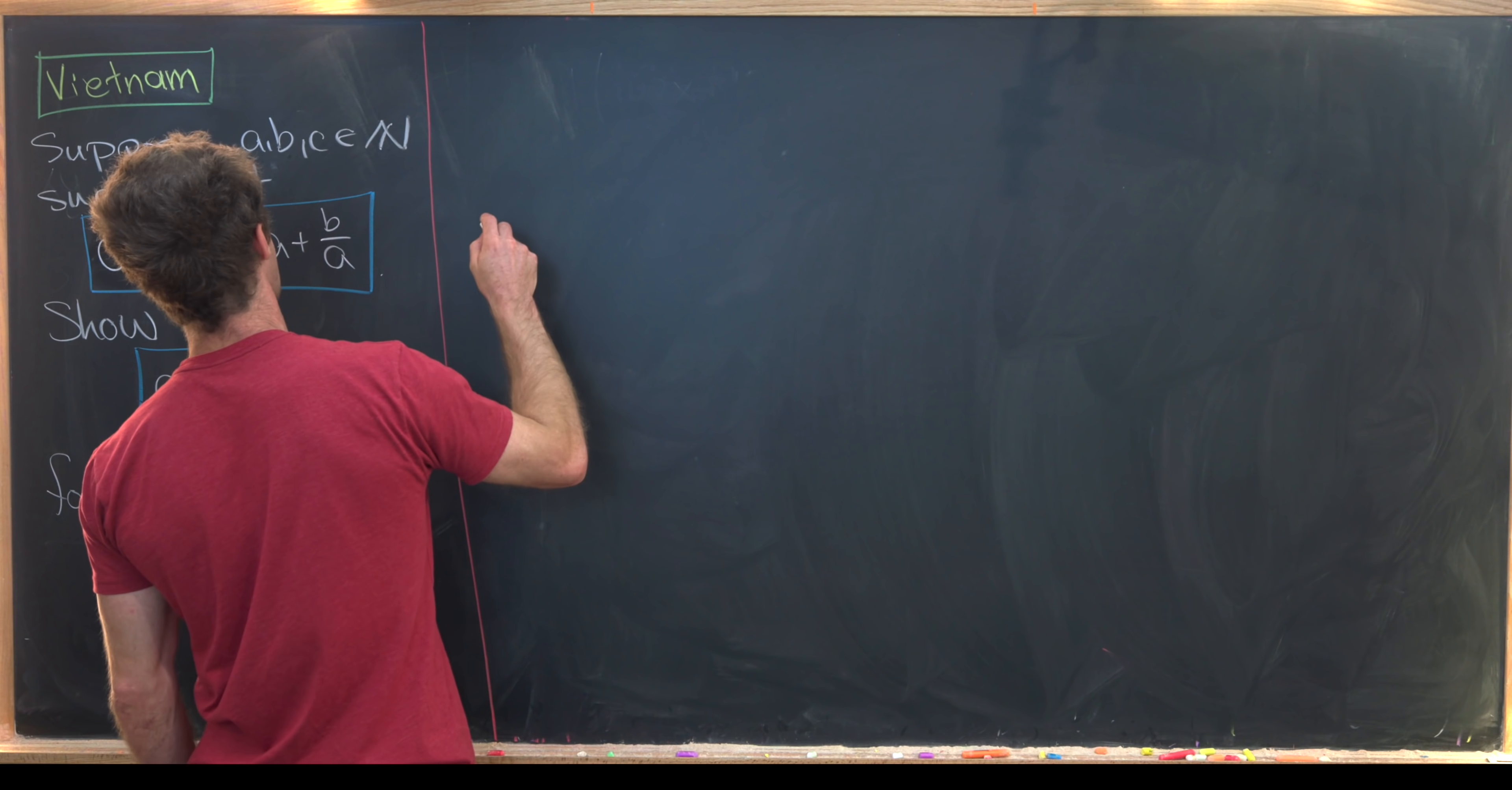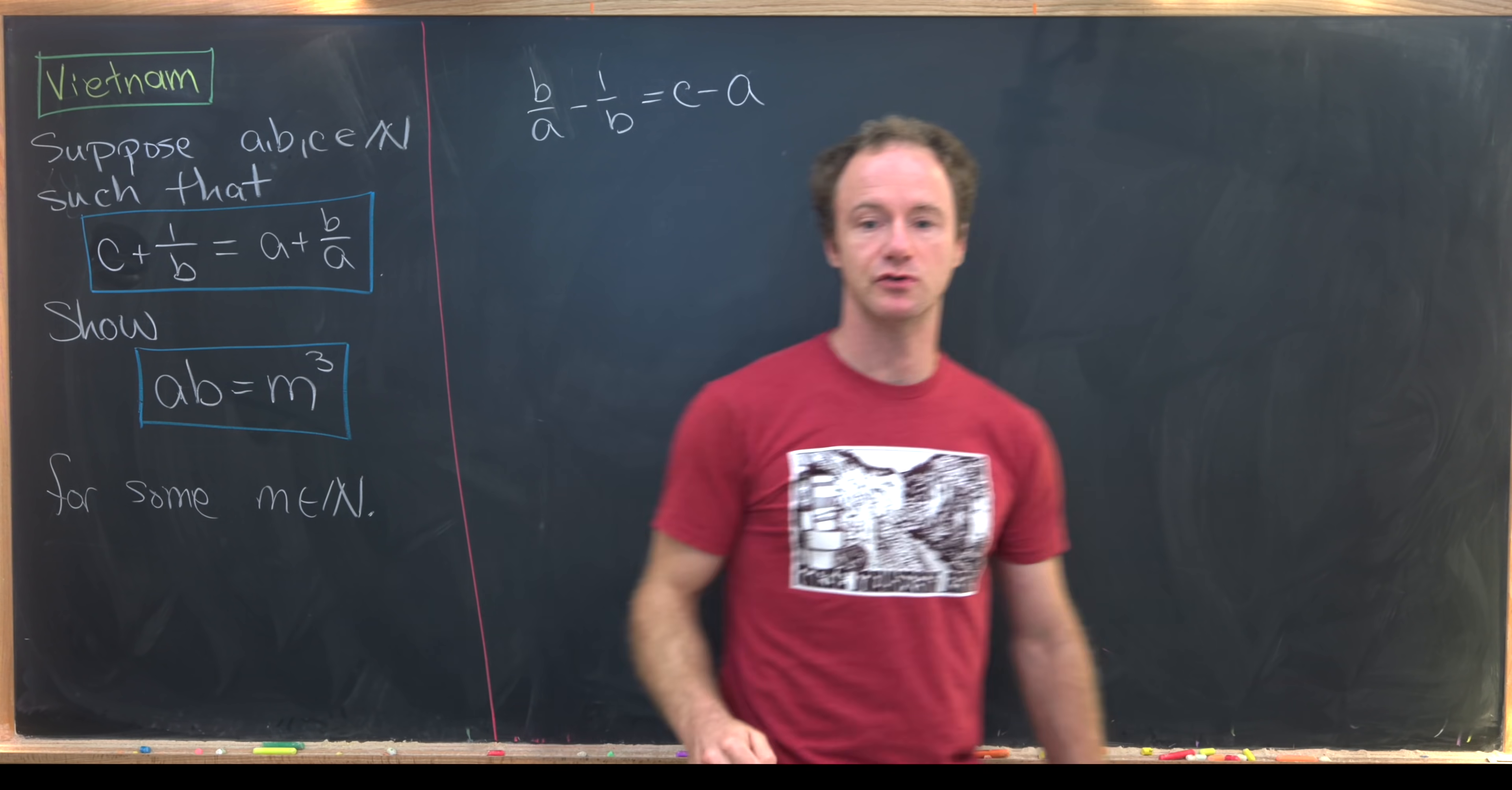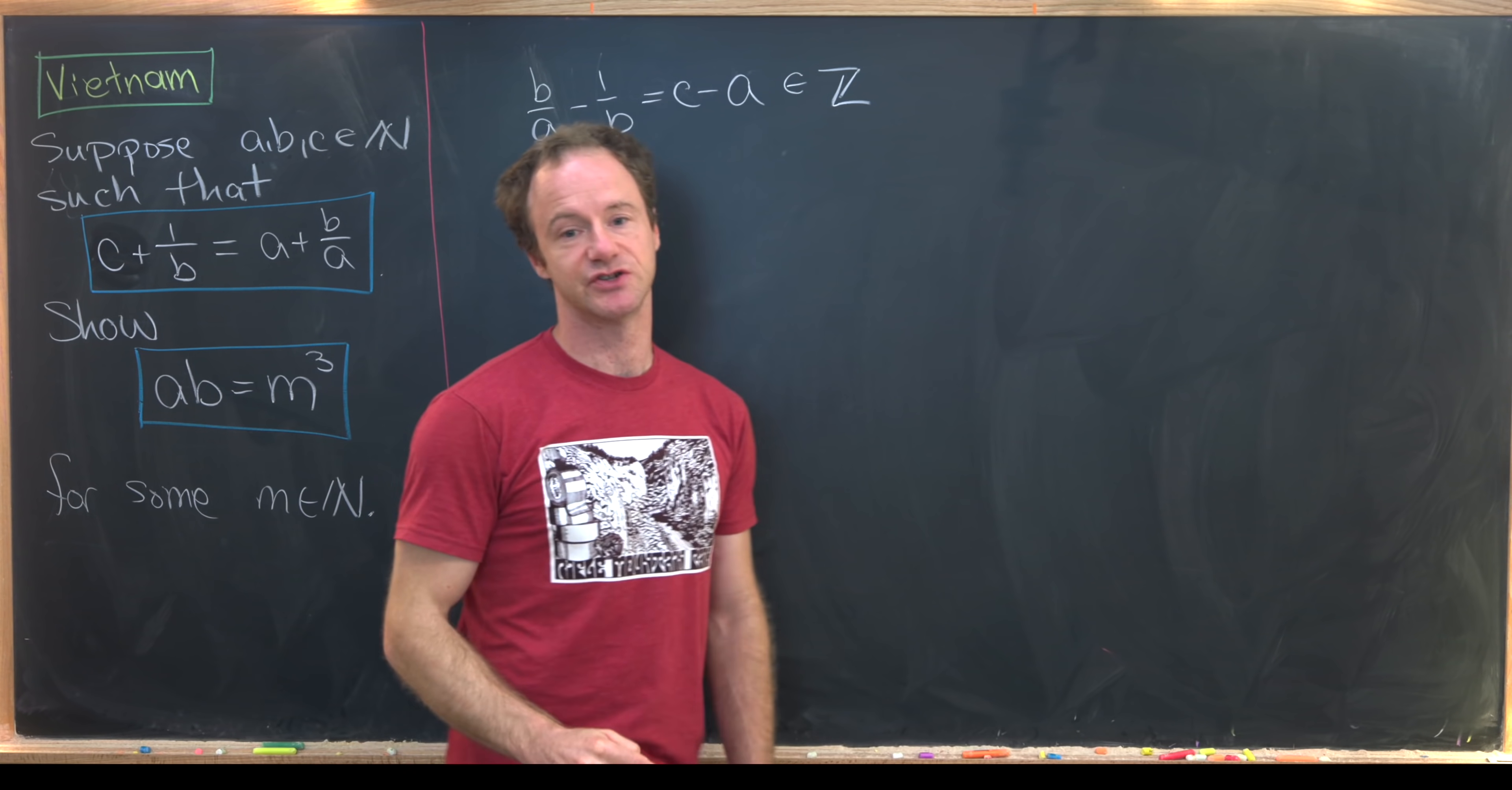So let's notice that we have B over A minus 1 over B is the same thing as C minus A. That's just rearranging this blue boxed equation. But C minus A is most definitely an integer because A and C are natural numbers, so their difference is an integer.